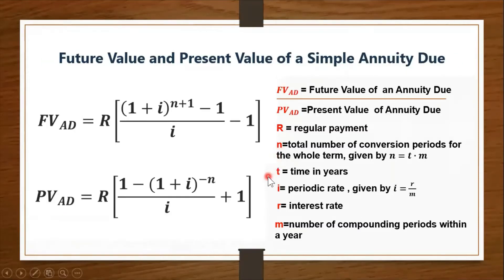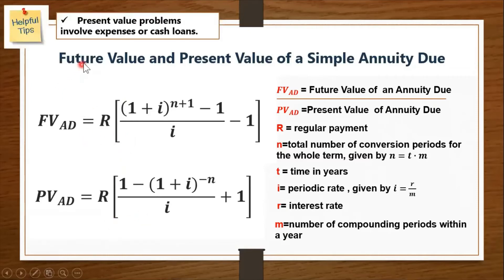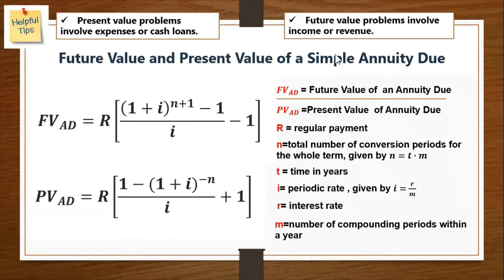Here are the formulas for finding the future value and present value of a simple annuity due — we added a subscript AD to distinguish them from the ordinary annuity formulas, but the other variables involved are the same. When solving word problems, it is important to determine which formula to use. Present value problems involve expenses or cash loans, while future value problems involve income or revenue.